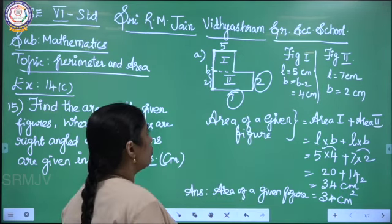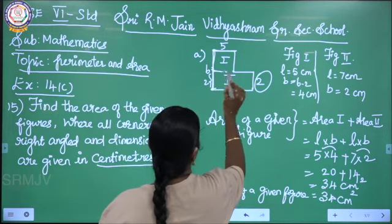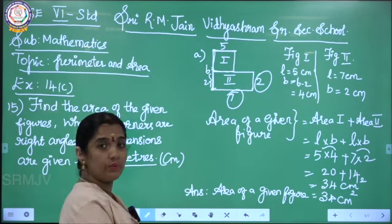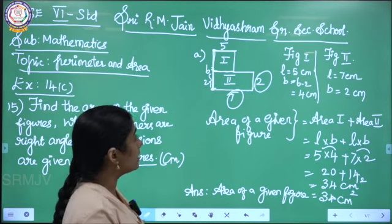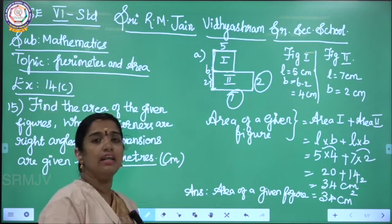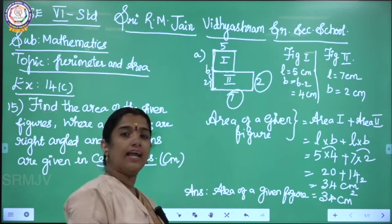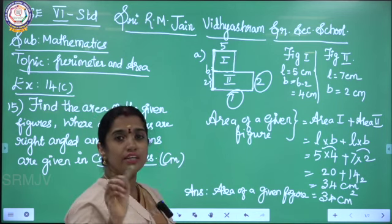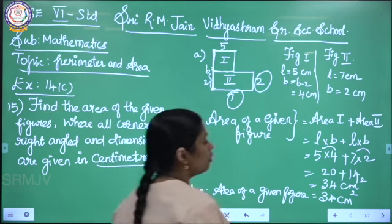Can you clear this, children? First you have to arrange the figure into a rectangle. If I join, I can get 2 rectangles here. After joining, I get figure 1 as well as figure 2. Then I segregate the length and breadth, substitute the formula: area of a rectangle is length into breadth. I find the area for both, add them — 20 plus 14 is 34. Area means the unit should be in the square, so centimeter square. Shall I move on to the next sum?